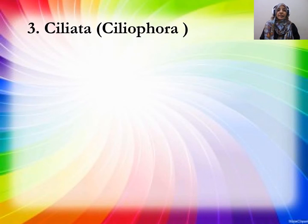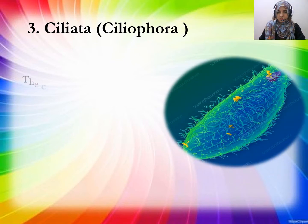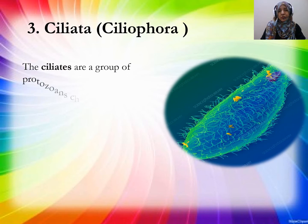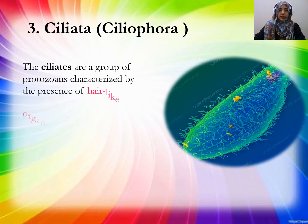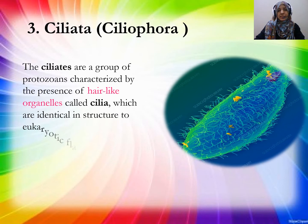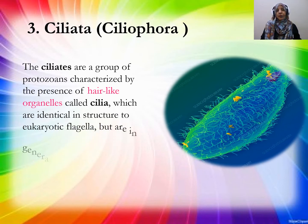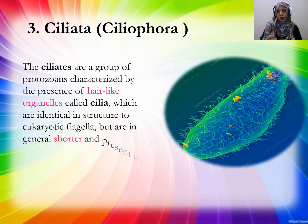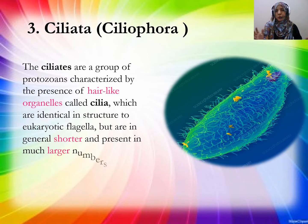Class Ciliata is also called Ciliophora. Organisms which Class Ciliata includes are called ciliates. The ciliates are a group of protozoa characterized by the presence of hair-like organelles called cilia. The organisms in Kingdom Protoktista are divided into 5 classes based on the presence of locomotory organs.